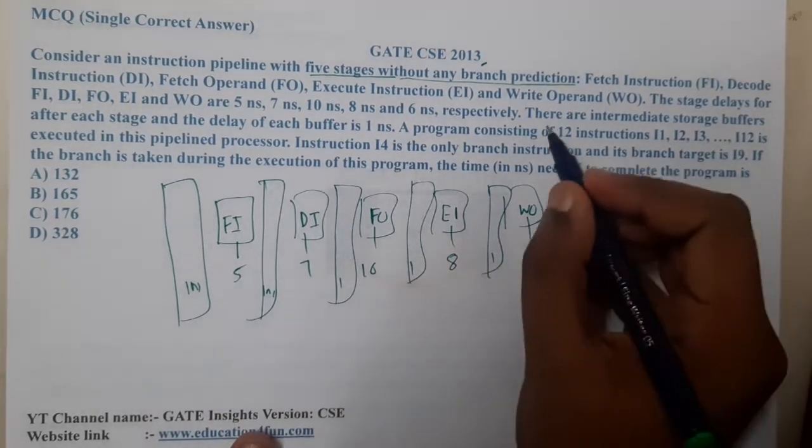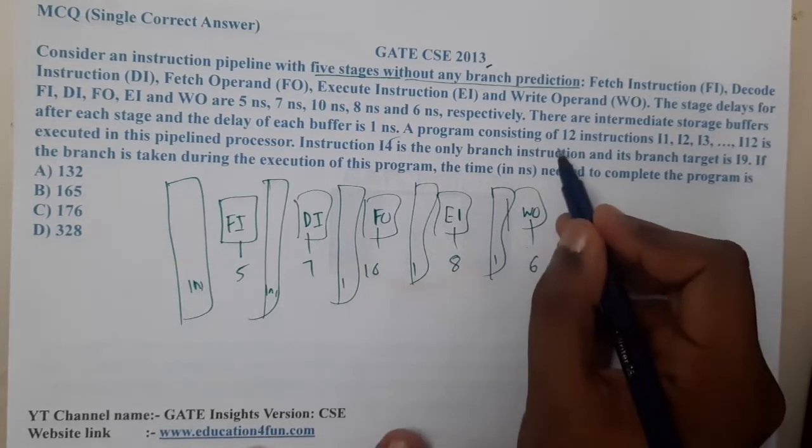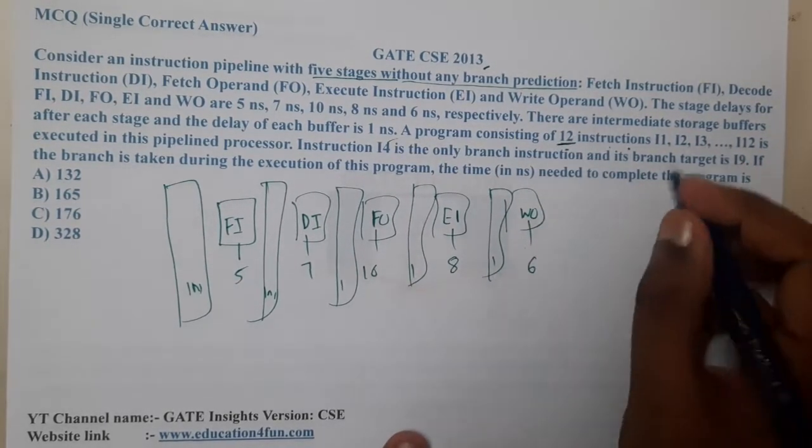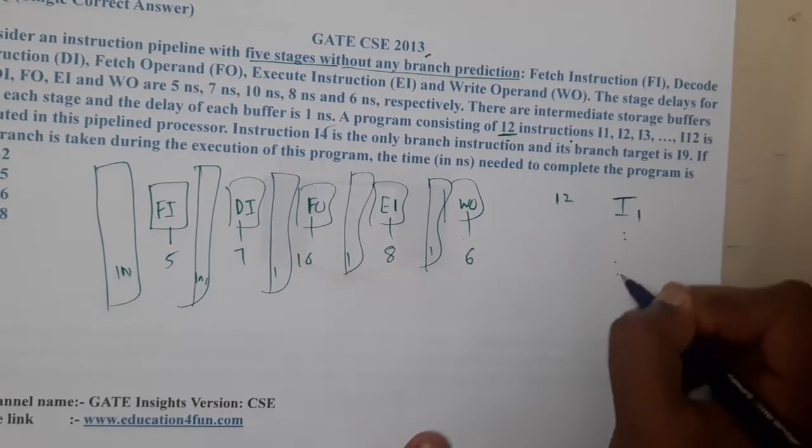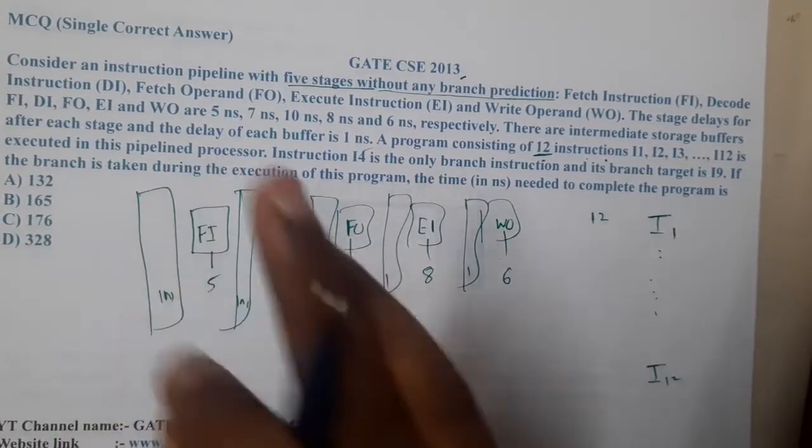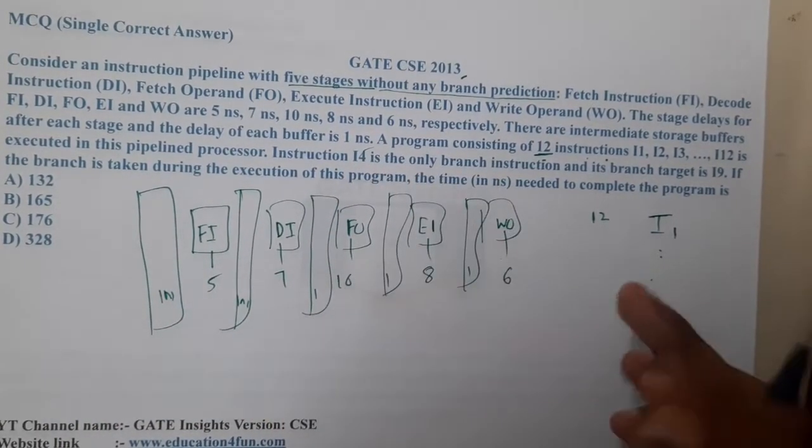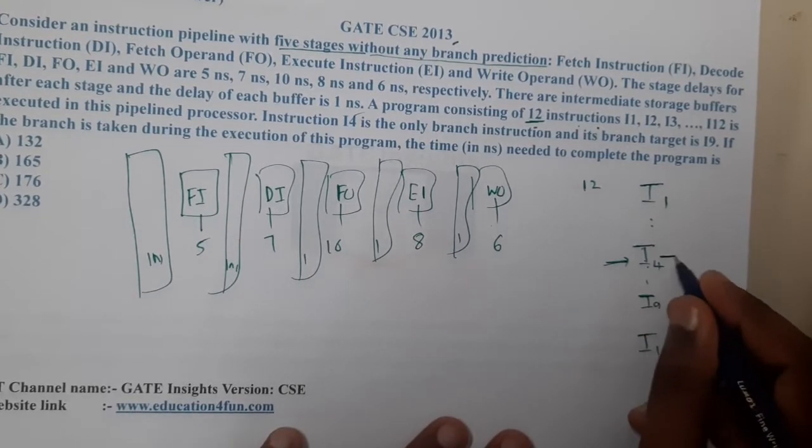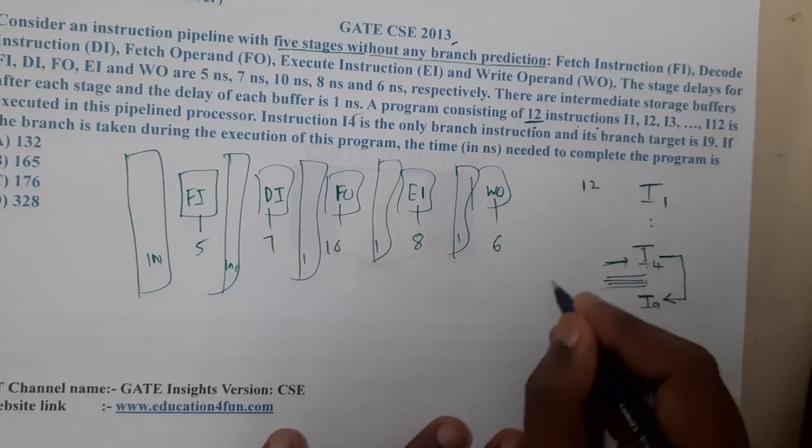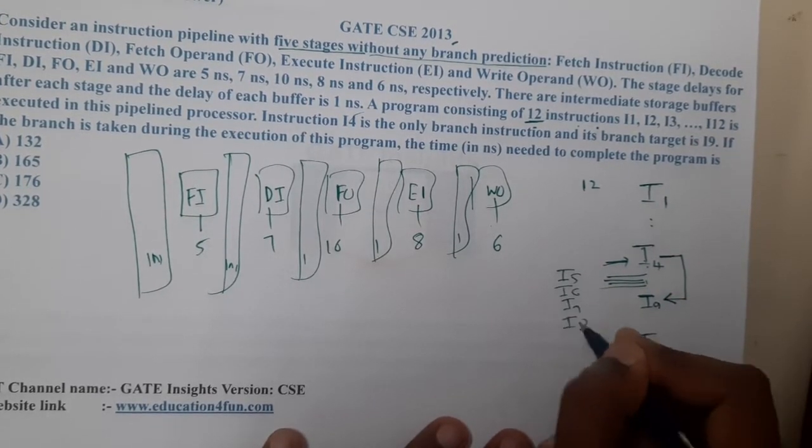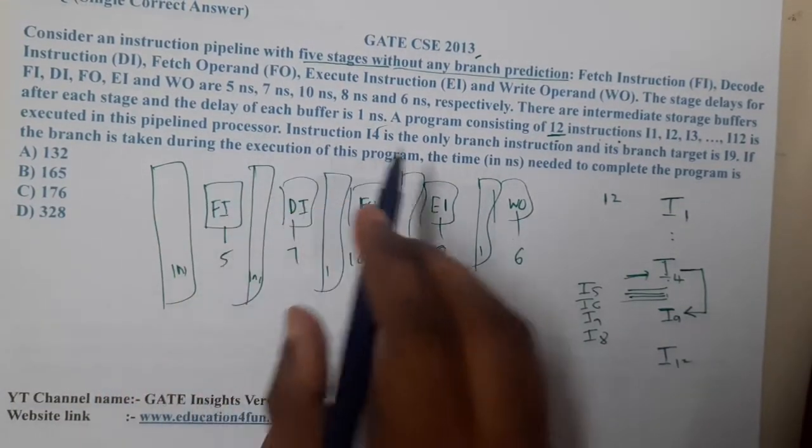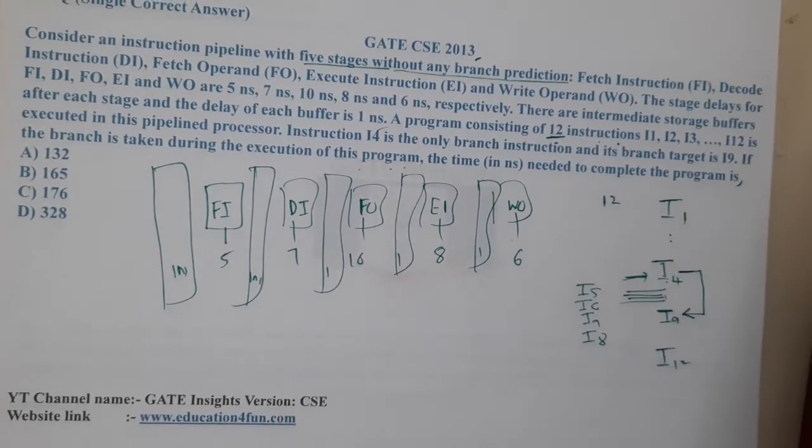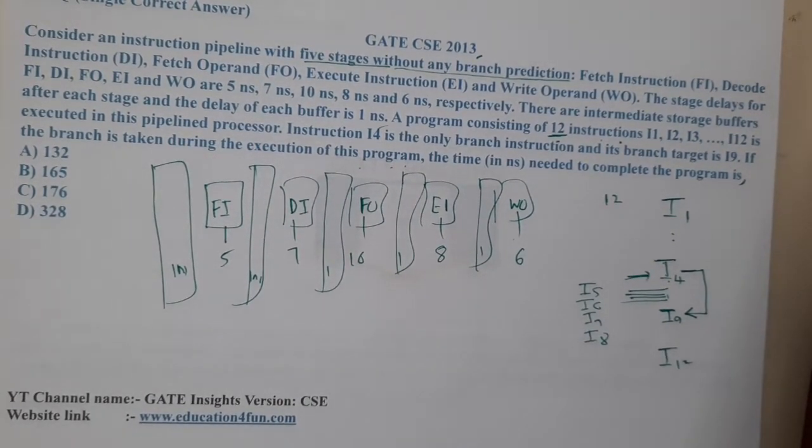A program consists of 12 instructions in total, starting from I1 to I12, executed in a pipelined processor. Instruction I4 is the only branch instruction, and its branch target is I9. If that condition is true, you will directly move to I9 and you will skip I5, I6, I7, and I8. They are saying the branch has been taken. The time in nanoseconds needed to complete the program.